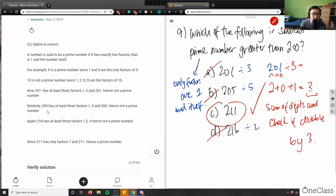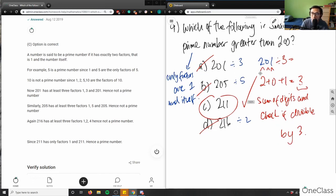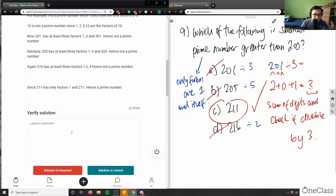In this case, A is incorrect. 205 has 1, 5, and 205. 216 has at least three factors. I said 2, but this probably has more. 211 is the correct answer. So C here is our prime number. This here is a great solution, step by step.